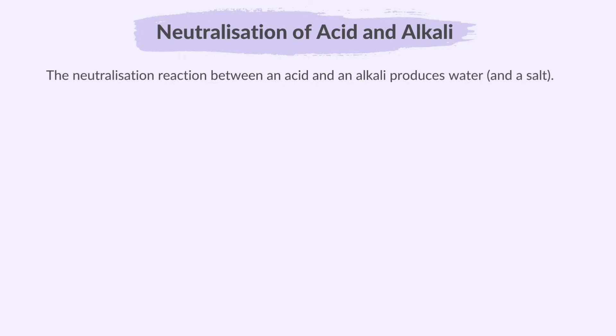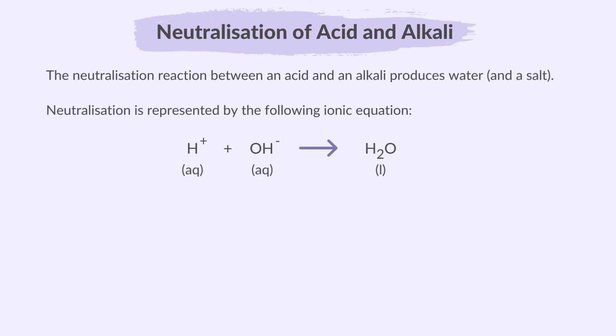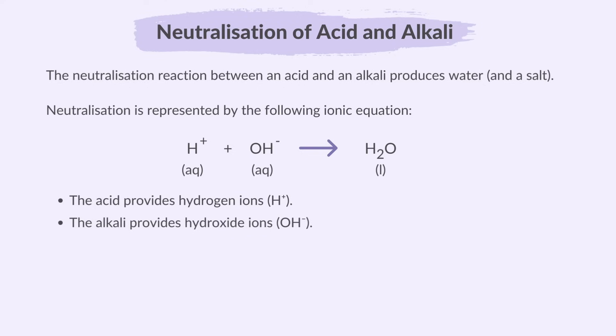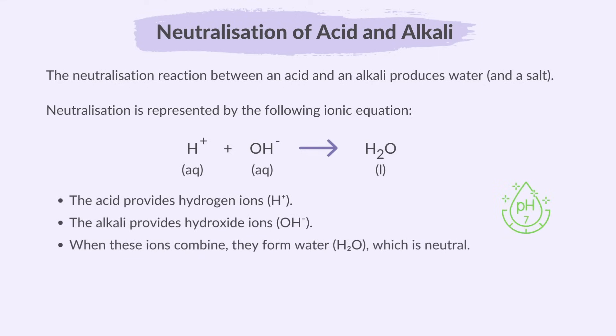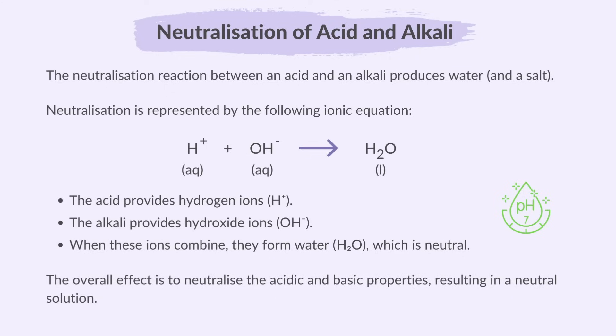The neutralization reaction between an acid and an alkali produces water and a salt. Neutralization is represented by the ionic equation in which the acid provides hydrogen ions and the alkali provides hydroxide ions. When these ions combine, they form water, which is neutral. This reaction typically results in the formation of water and a salt, depending on the specific acid and alkali involved, with the overall effect of neutralizing the acidic and basic properties to produce a neutral solution.